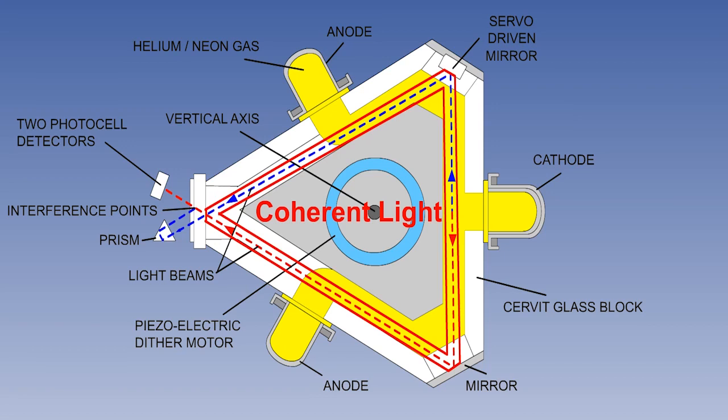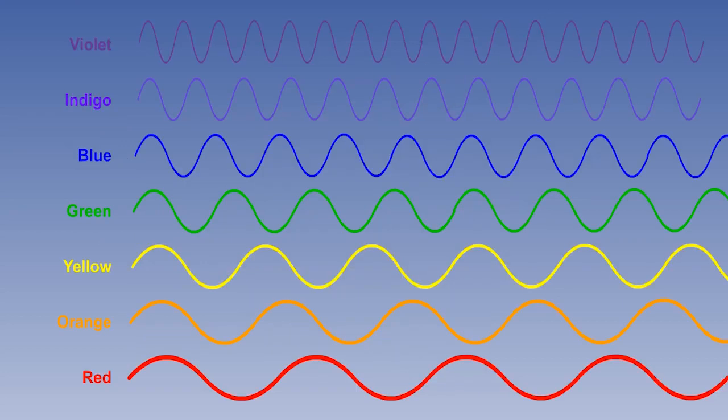One of the defining characteristics of lasers is that they produce what is known as coherent light, that is light at a single frequency. Normal light, such as sunlight or light from an electric bulb,